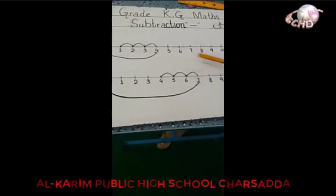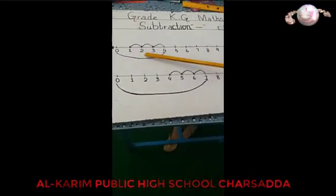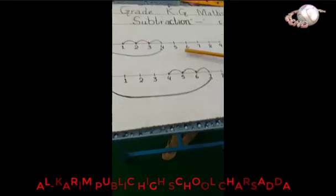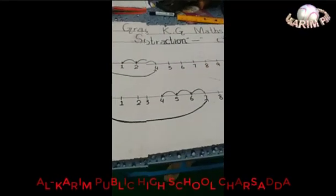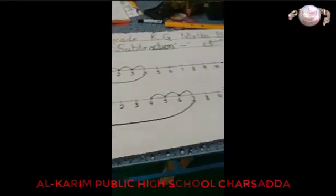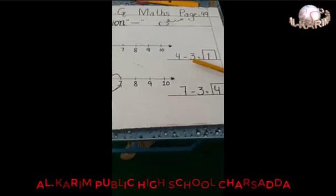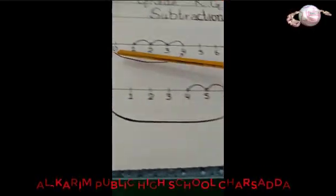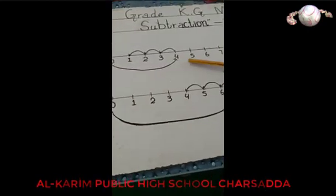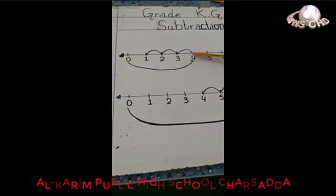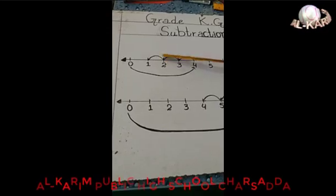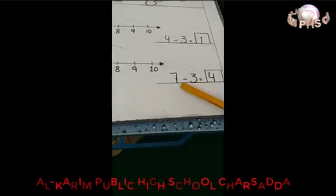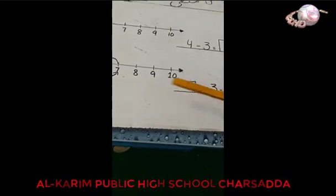Look, draw the number line. Start from zero and go up to ten: zero, one, two, three, four, five, six, seven, eight, nine, ten. Question: four minus three. On the number line, draw a line going to the left for minus. Start from zero, go to four, then jump back three — one, two, three. The answer is one.